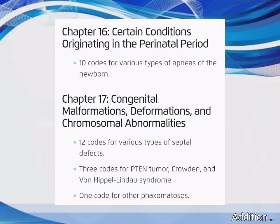Chapter 16 – Certain Conditions Originating in the Perinatal Period: 10 codes for Various Types of Apneas of the Newborn. Chapter 17 – Congenital Malformations, Deformations, and Chromosomal Abnormalities: 12 codes for Various Types of Septal Defects, 3 codes for PTEN Tumor, Cowden, and Von Hippel-Lindau Syndrome, and 1 code for Other Phakomatoses.